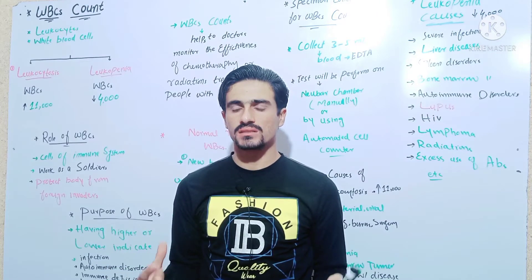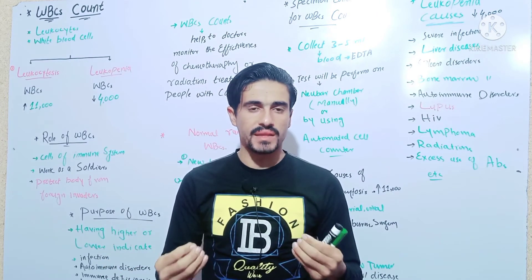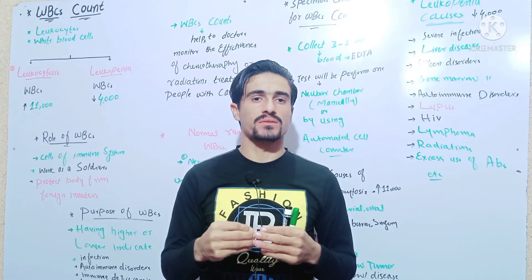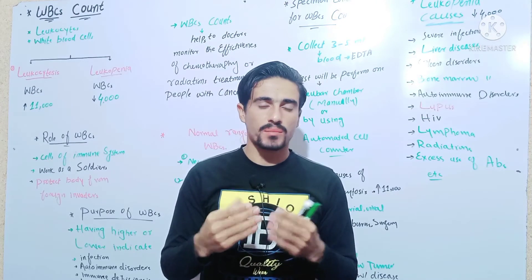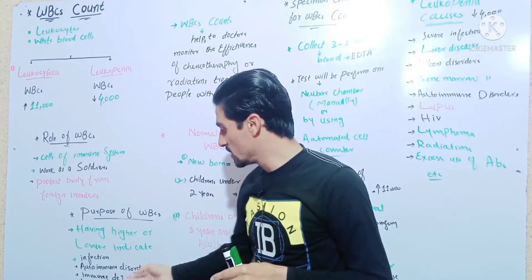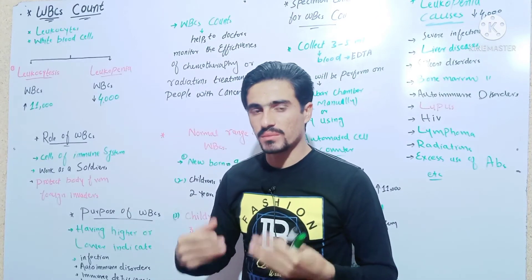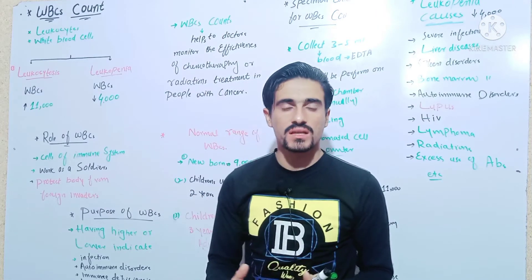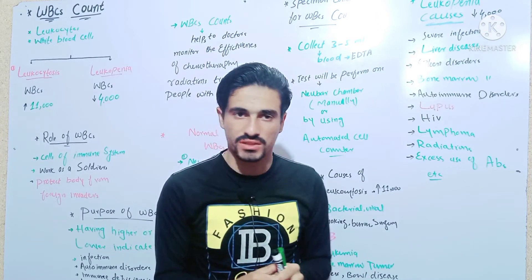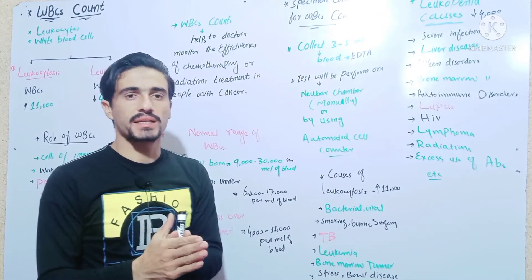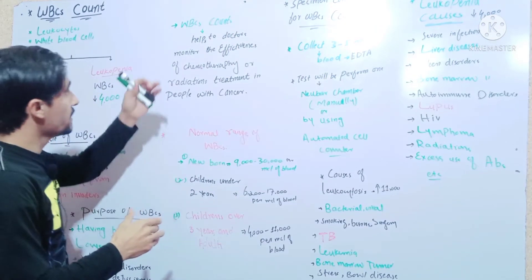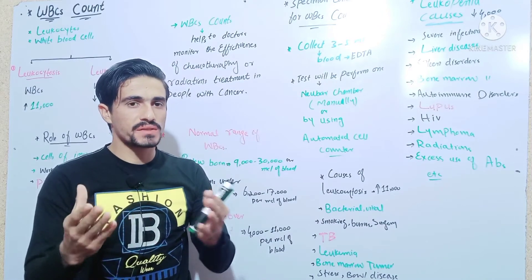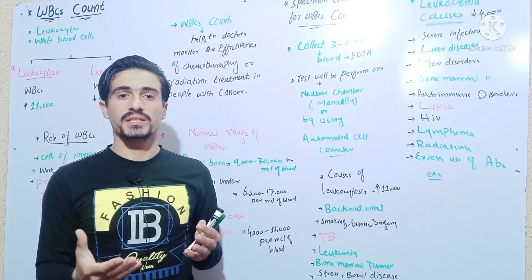Autoimmune diseases are conditions where the immune system attacks the body itself. There is a difference between immune deficiencies and autoimmune diseases, and also blood disorders. These conditions all affect the WBC count differently — whether the ratio is low or high, differentiation helps clarify the condition.